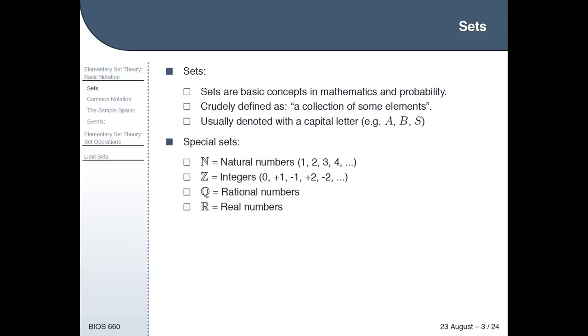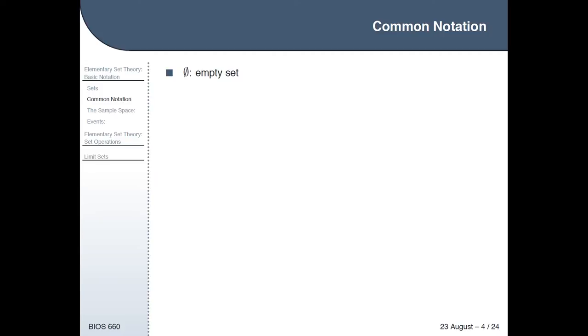Rational numbers are basically anything that can be represented as a fraction where you have an integer on the top and an integer on the bottom. 7/4 would be a rational number, whereas something like pi or the square root of 2 are irrational because they cannot be expressed as a fraction. Real numbers are any number that can be expressed as a fraction or otherwise. A zero with a line through it is the empty set — a set that doesn't contain any elements.